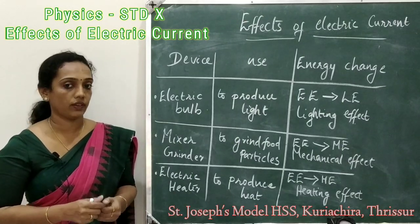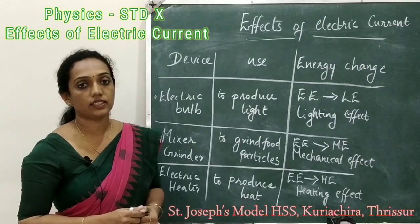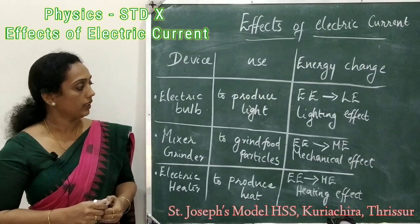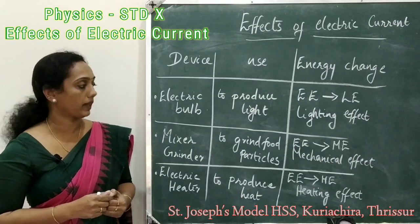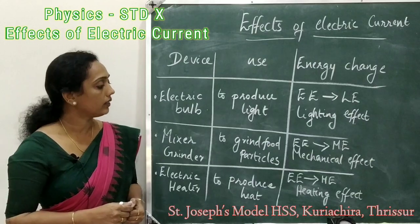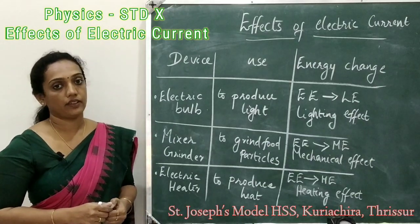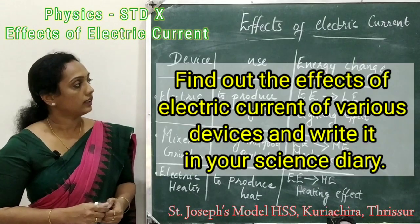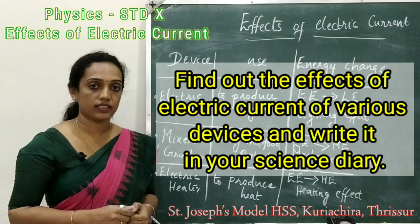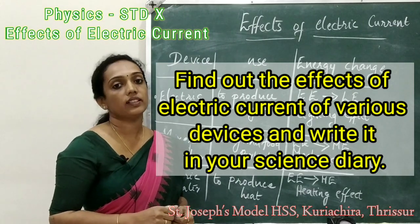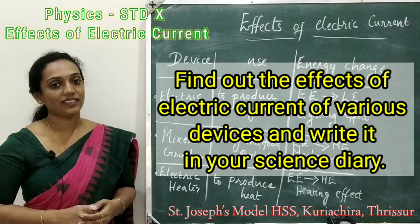If a device converts electric energy into light energy, it has a lighting effect. If it converts electric energy into mechanical energy, it has a mechanical effect. And if it converts electric energy into heat energy, it has a heating effect. Now find out the effects of electric current of various devices and write them in your science diary. That's all for today's class — hope you are clear. Thank you.